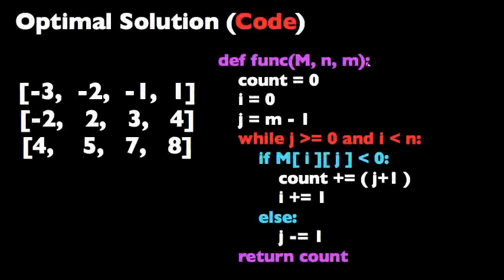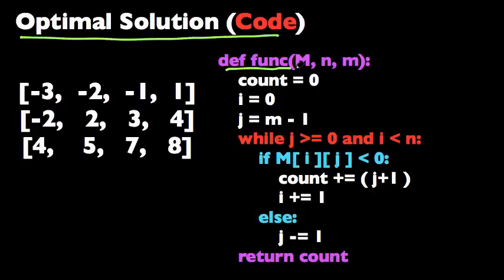So here's the optimal solution in code. We're defining our function here with the matrix and the number of rows and the number of columns as input. We're initializing count to zero, which we're going to use to keep track of the number of negative numbers we've seen so far, and i to zero.